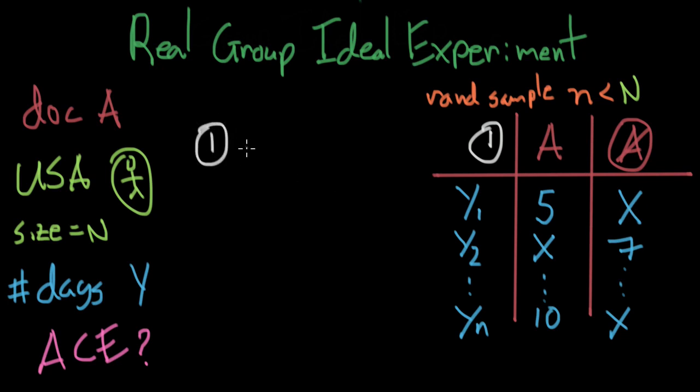We call this problem, problem one, the problem of identification. So identification. Identification is specifically a causal inference question. This is what we will spend a lot of time trying to figure out with causal inference.